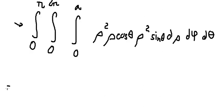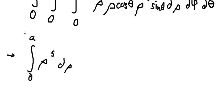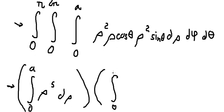And now we can put it like this. We put the integration from 0 to a, d rho. Then we multiply by the integration from 0 to 2π, d phi. And the last one.